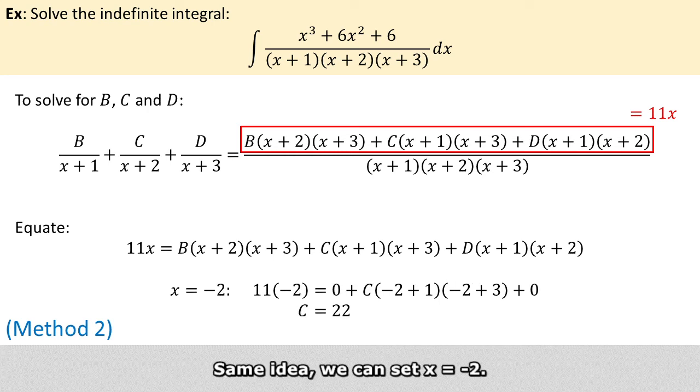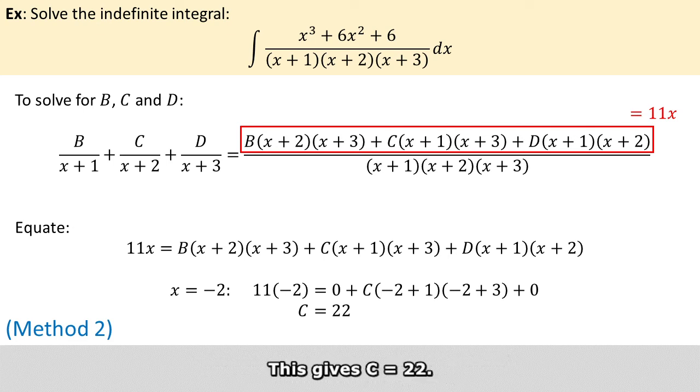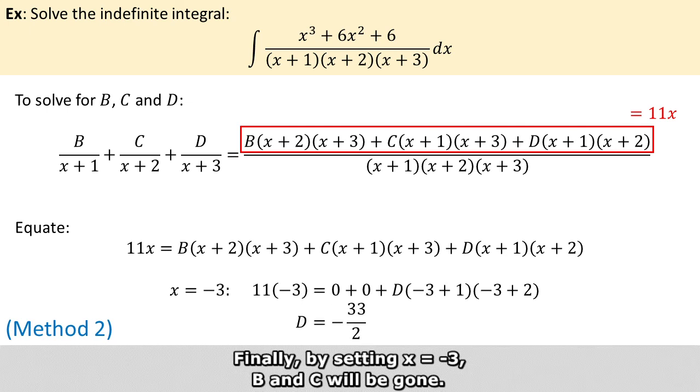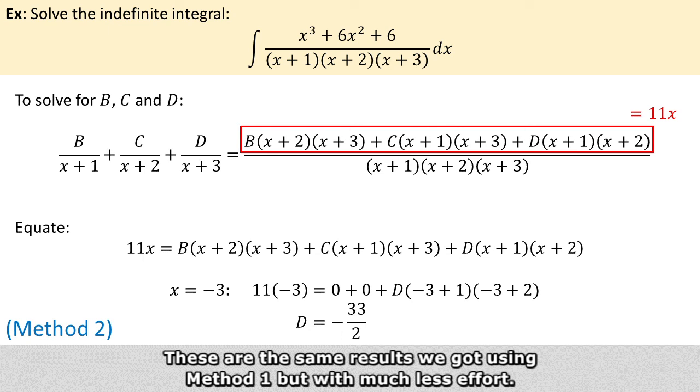Same idea, we can set x equals minus 2. This removes the terms of B and D and leaves us with only C, and this gives C equals 22. Finally, by setting x equals minus 3, B and C will be gone, and we found out that D equals minus 33 over 2. And these are the same results we got using method 1, but with much less effort.